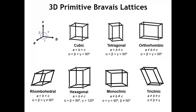Then we move down to the lower four Bravais lattices, where not all three lattice vectors are perpendicular to one another. Starting on the left, we see the rhombohedral lattice, which can be obtained from a cube by stretching along one of the body diagonals. All three lattice vectors are the same length, and the angles between them — alpha, beta, and gamma — are the same, but that angle is not equal to 90 degrees.